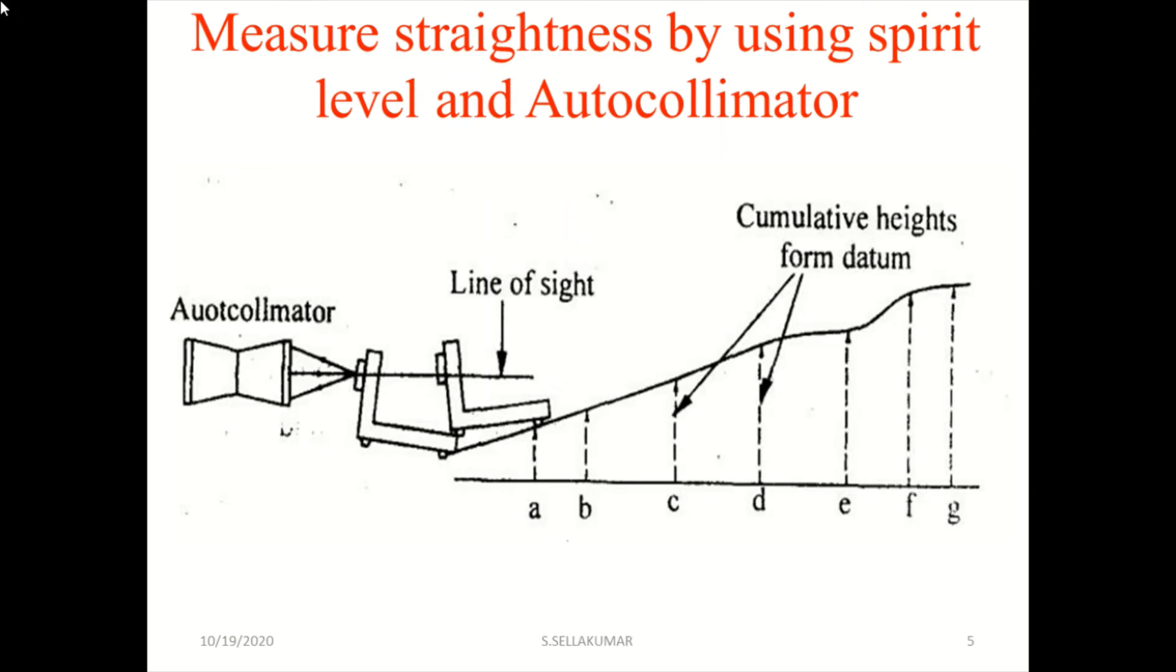Auto-collimator is a device which is used to measure linear measurements. It is also used to measure the straightness. This is the auto-collimator, this is the line to be checked for straightness. You can measure how much straightness is there, and the variation can be easily measured. This is the height, and then the variation you can easily measure.